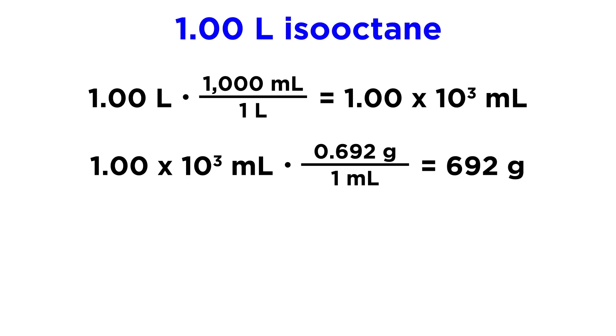So now that we have a mass of isooctane, we want to use that mass to get moles because that way we can use the delta H of combustion that we were given. So 692 grams times 1 mole over 114 grams. That's what we get just by adding up all the carbon and hydrogen atoms. That is going to give us 6.07 moles.